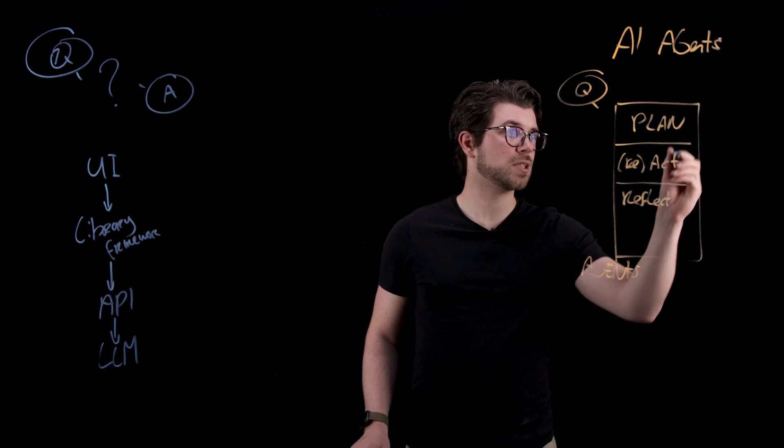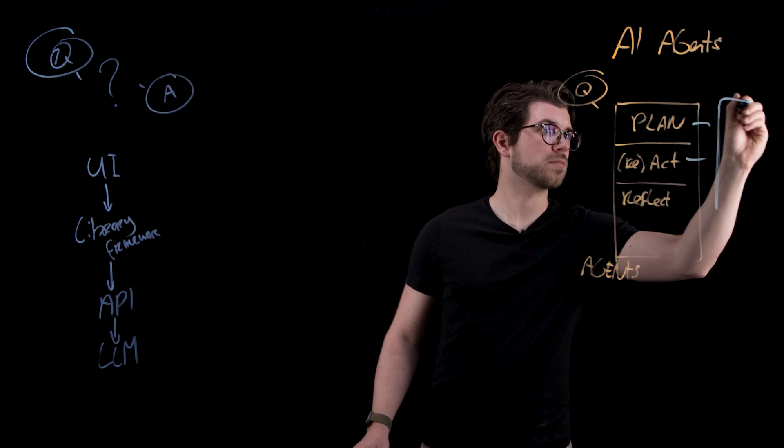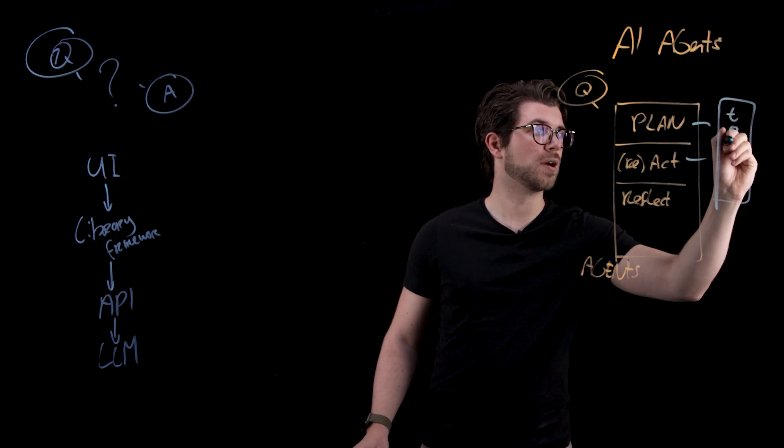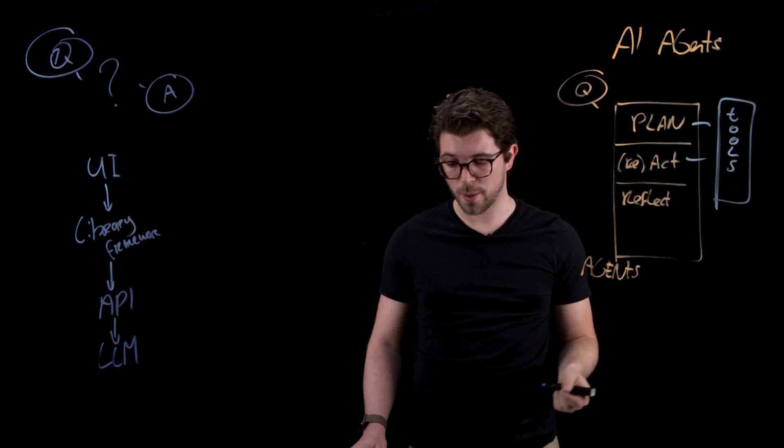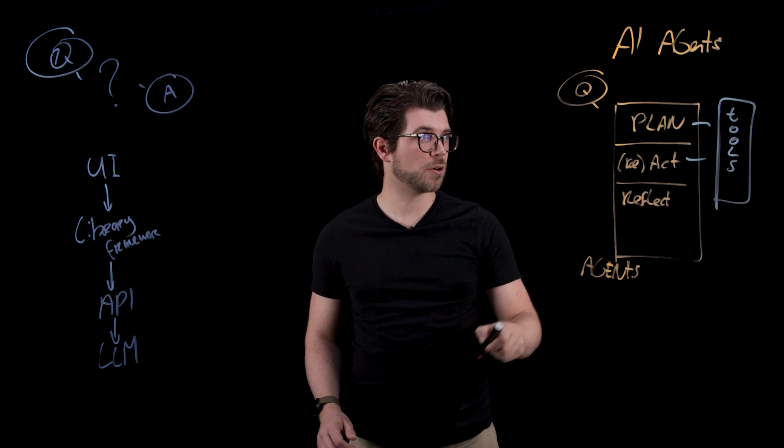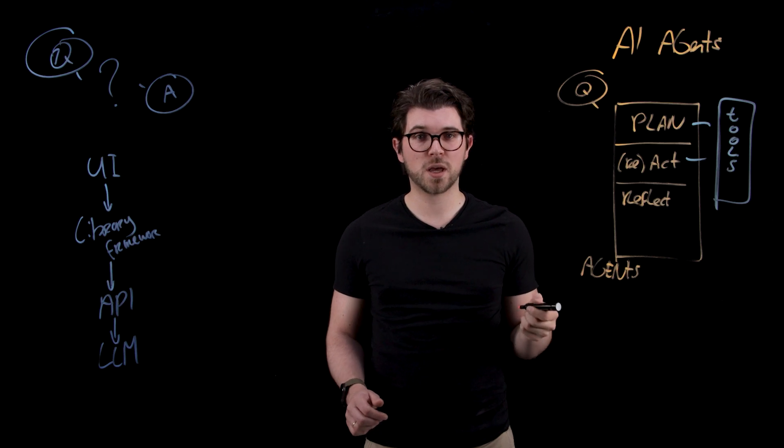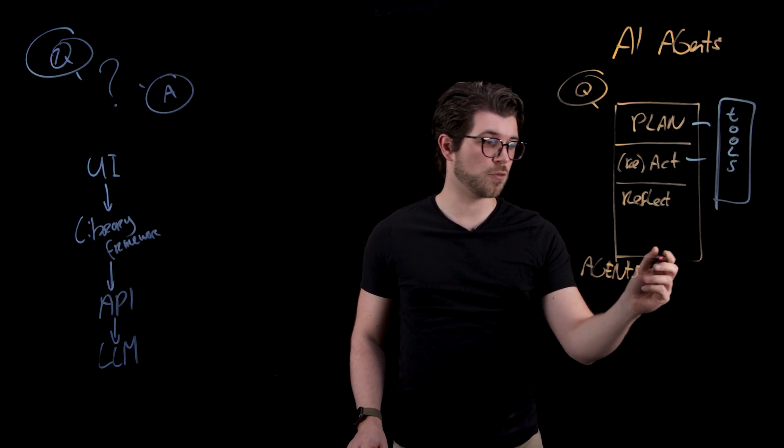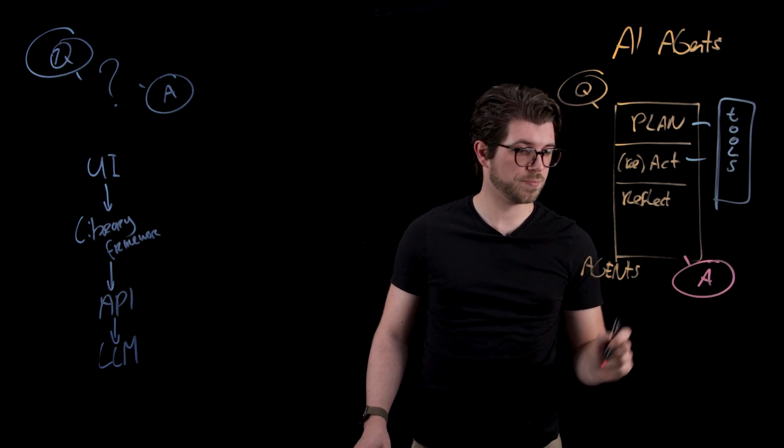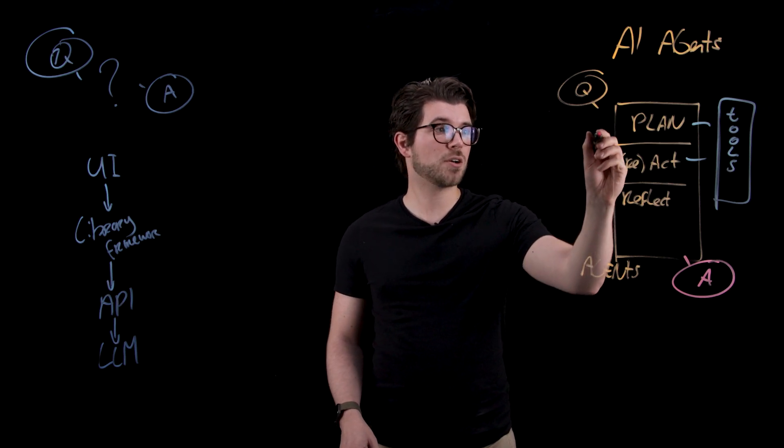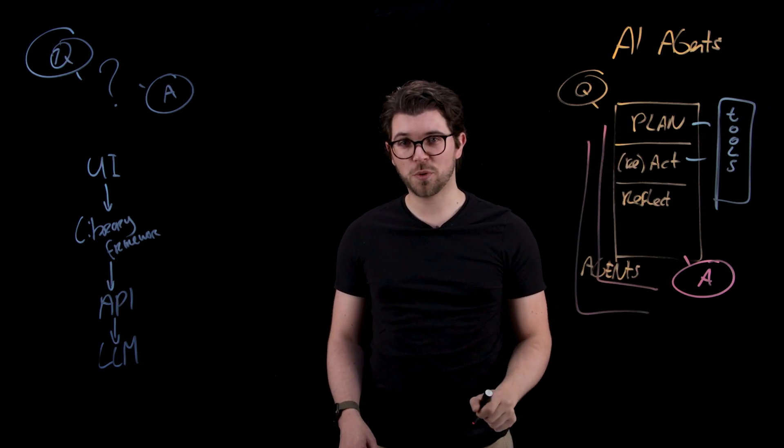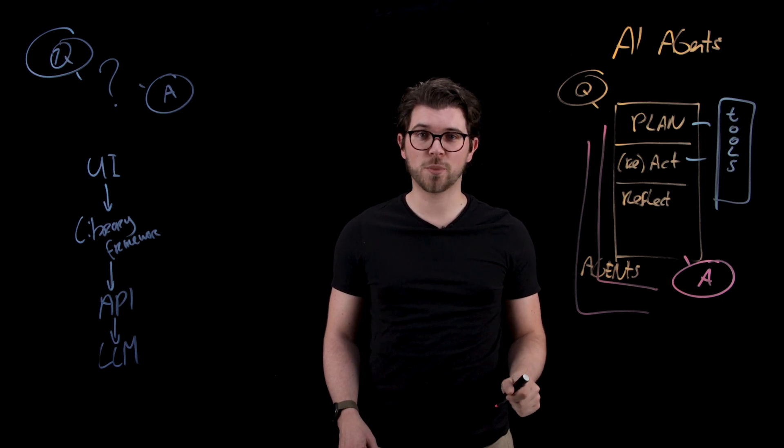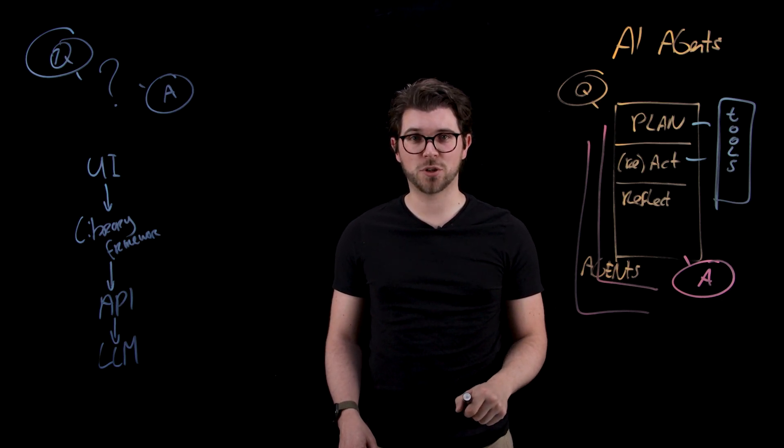For the plan and act stage it needs a set of tools, and these tools could be either APIs, databases, or code, for example to crawl the web. The LLM is going to use those tools to plan and execute, and finally provide you with your final answer. Next to a single agent you can also have a multi-agent framework. This typically involves a supervised agent which is going to determine which agent should be called to answer your question.